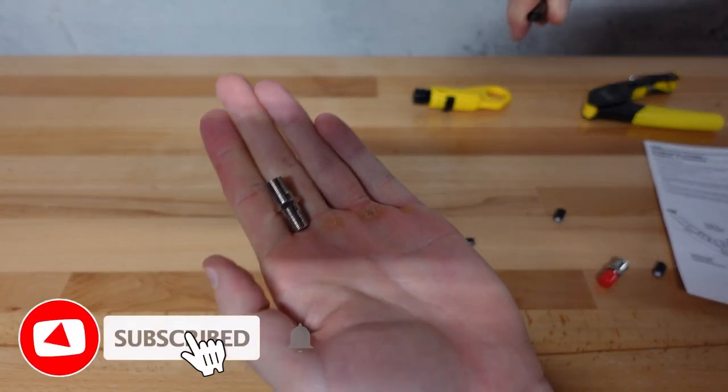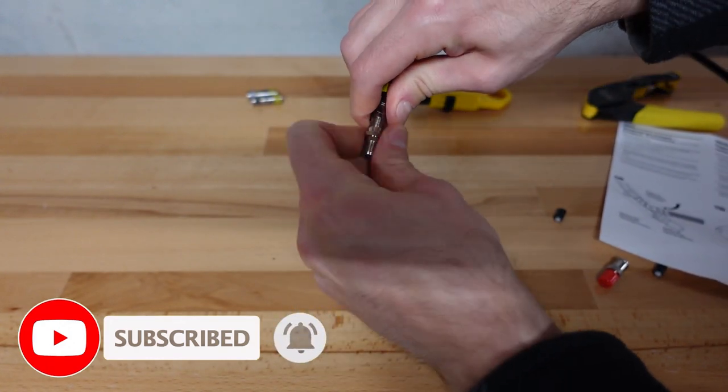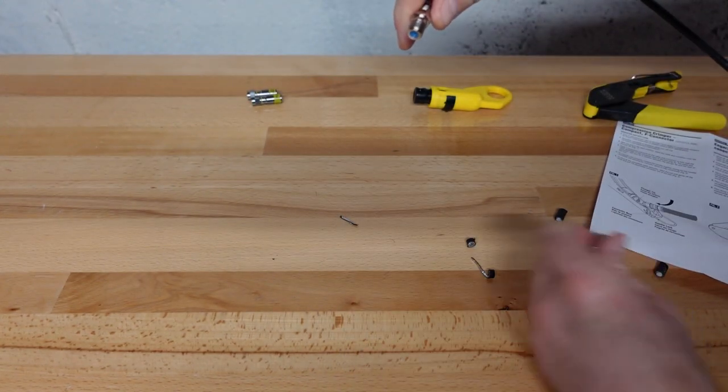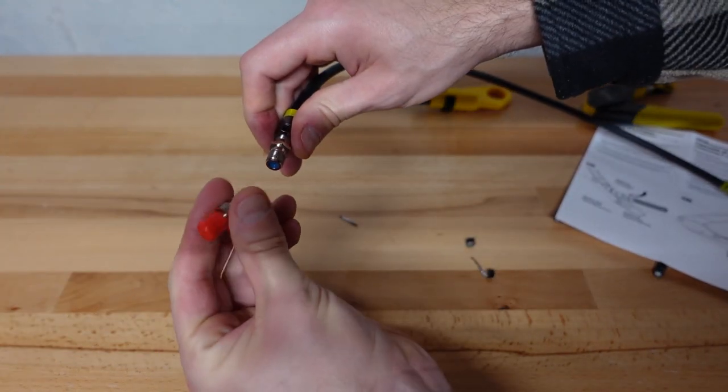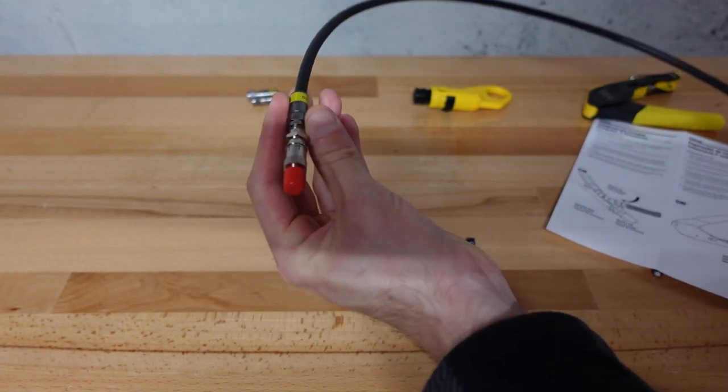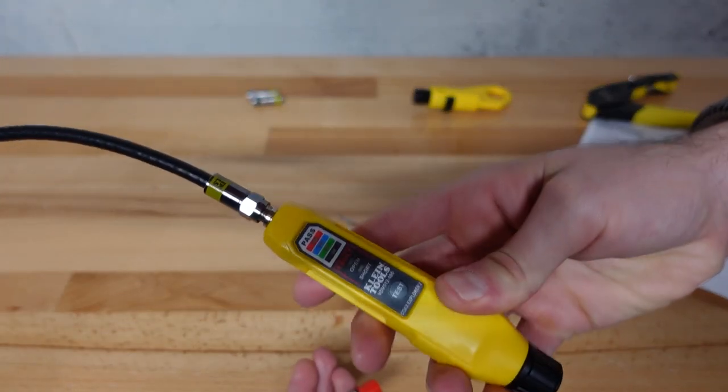So we're going to take this connector here. This allows me to connect up two coax cables. Screw this on real quick, and then we take the other end of the test kit and put it here like that. There we go. We got one end of the cable tester in the main part of the cable tester here.